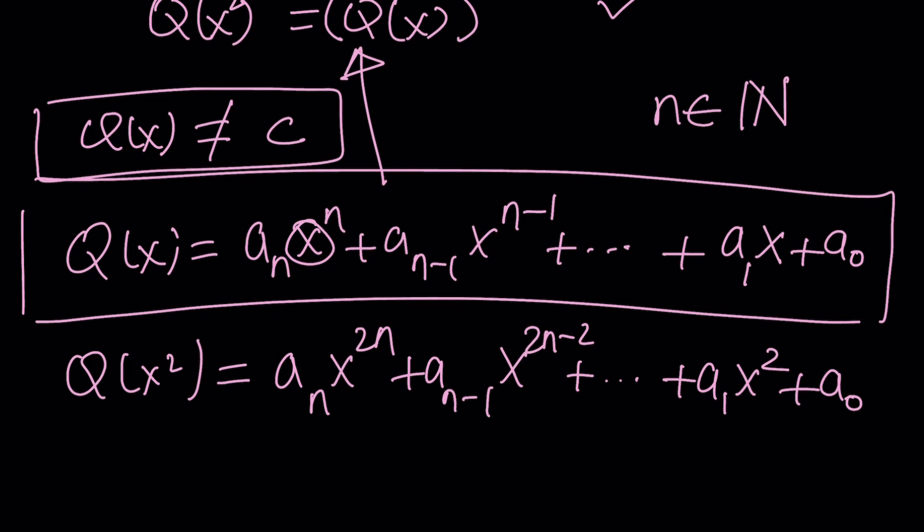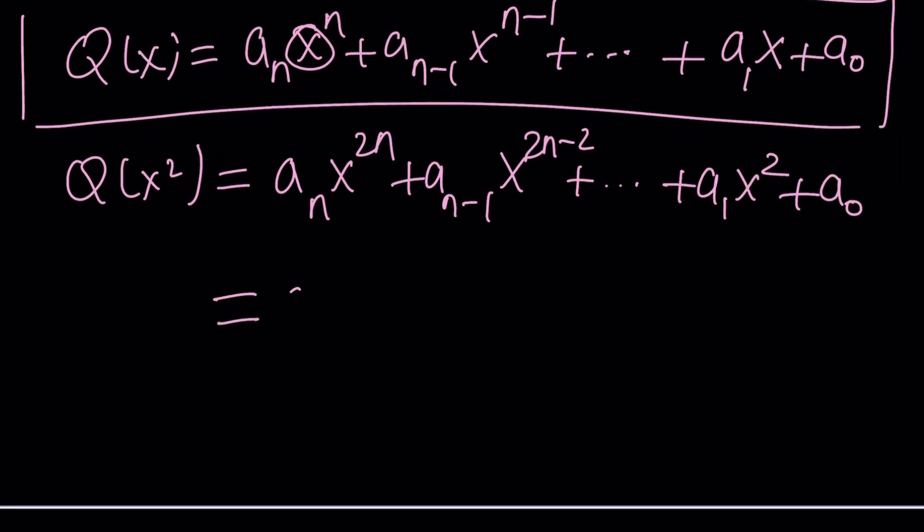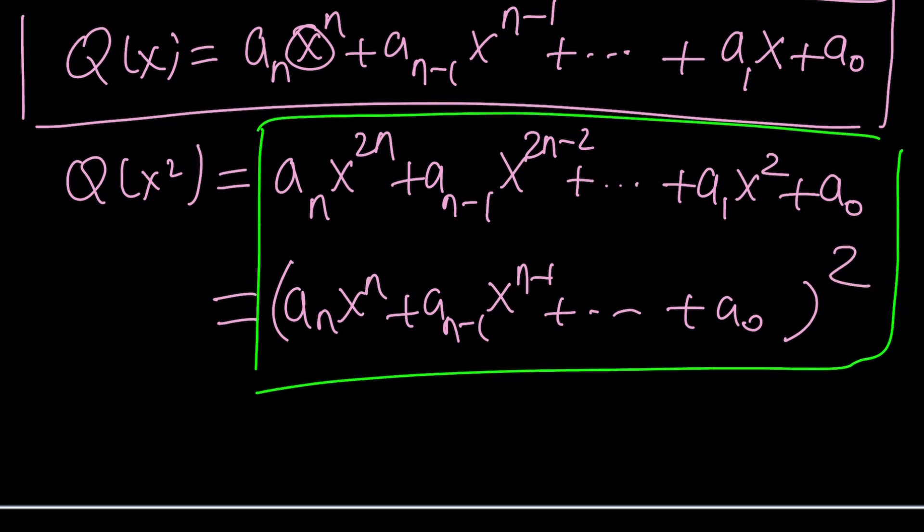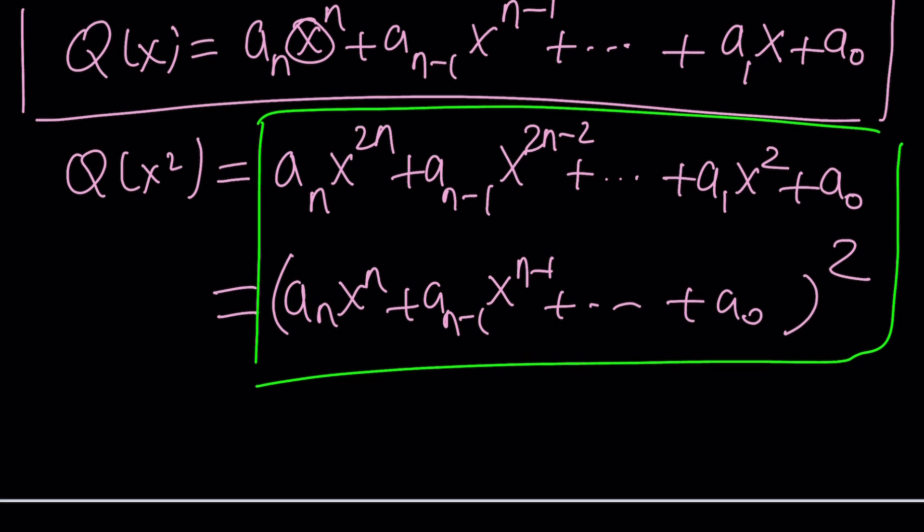Now, we want this to equal Q(x) squared. In other words, this equals this expression squared. And of course, it ends with a_0 squared. Now, how do you make this possible? Is that possible at all? Now, think about it this way.